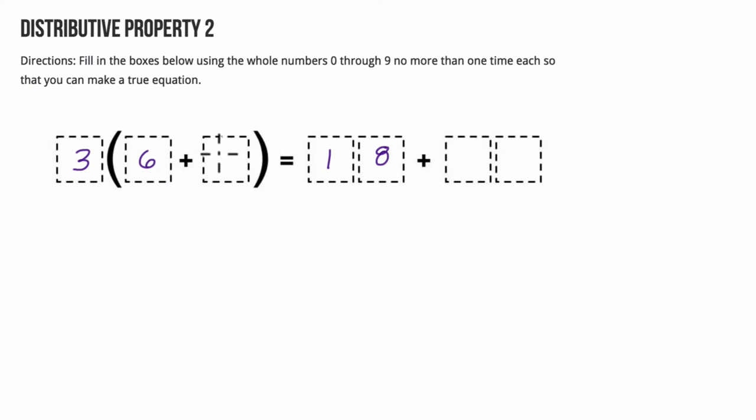So now I'm thinking okay, 3 times 7 is 21. Can't do that because I've got a 1 here. 3 times 8 is 24. Can't use it again. 3 times 9 though does work. It gets me 27 and there are no repeats.